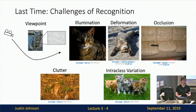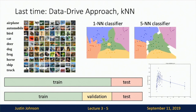We also talked about the various challenges of image classification — things like viewpoint changes, illumination changes, deformation, etc. The challenge in building high-performance recognition systems is making classifiers robust to all these different types of variation in the visual input.